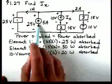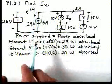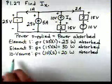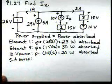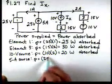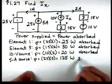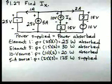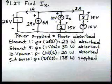Now let's look at the current source. We see the voltage across it and the current — notice the current is coming out of the plus and entering the minus, so this source is actually supplying power because that's the opposite of the passive sign convention. P equals 25 times 5, which is 125 watts supplied. So element one, element three, and the 10-volt source are absorbing power, while the 5-amp source is supplying power.